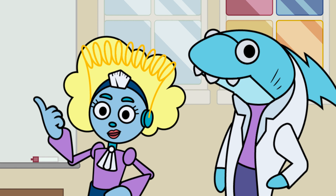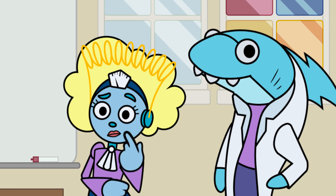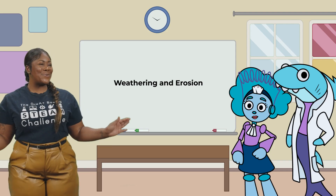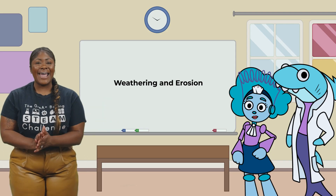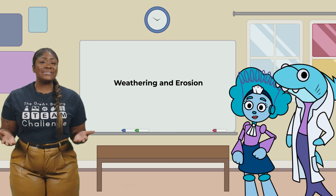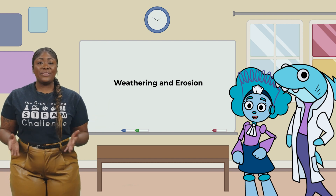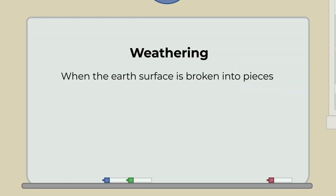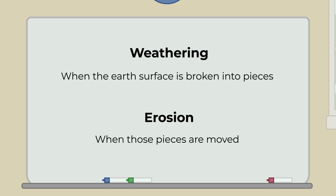Oh, Ms. Wilson, I think I have a guess. Does weathering and erosion have to do with breaking something down? Woo-wee! You are hot like the sun, Enlighten! To be exact, weathering is when pieces of the Earth's surface are broken down into smaller pieces. Erosion is when those smaller pieces are moved from one place to another.